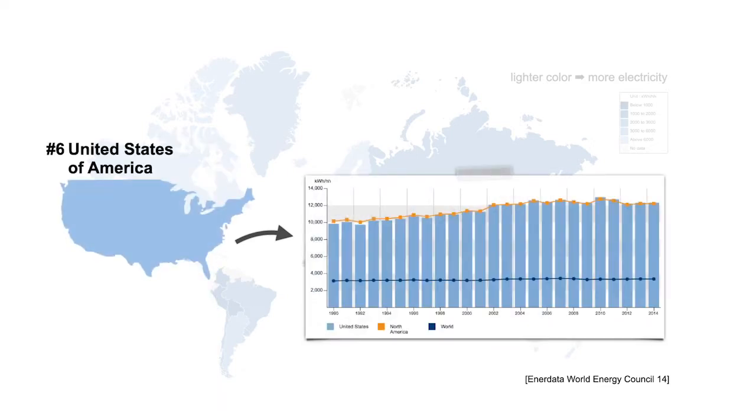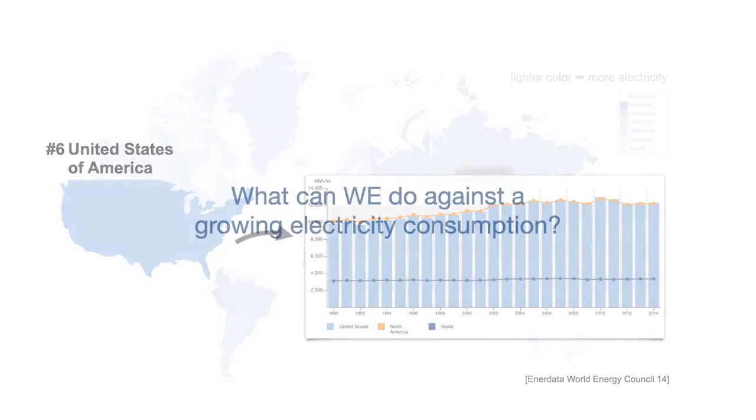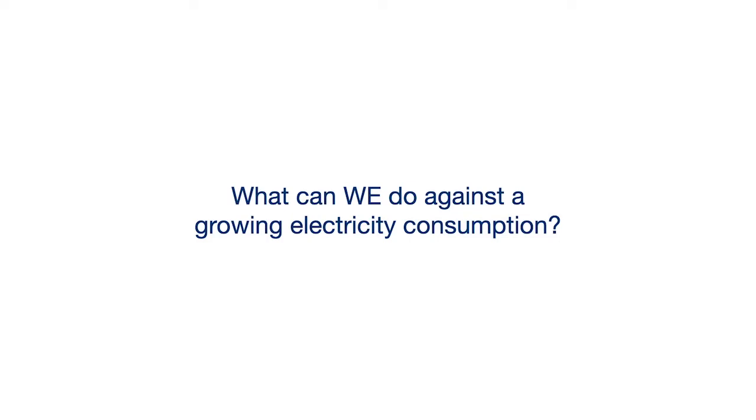We can also see demographic differences in the consumption amount. For example, in the US we have a massive 12,000 kilowatt-hours per capita, but we see the same trend of a rise in electricity consumption. This is actually a bad thing, considering that the production of electricity is a large contributor to the emission of greenhouse gases.